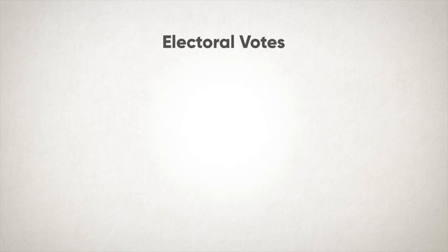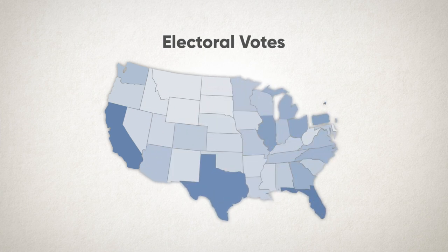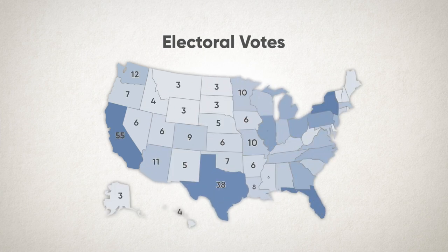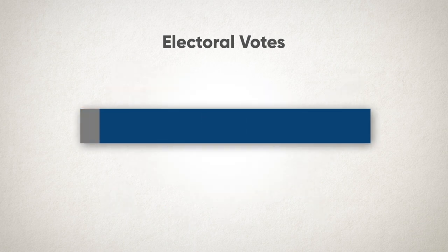There are a total of 538 electoral votes up for grabs in the Electoral College. These electoral votes are spread out between the 50 states and Washington DC. To win the presidency, a candidate must win a majority of those electoral votes — that's 270 if you're keeping score.